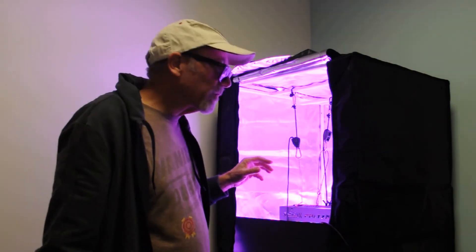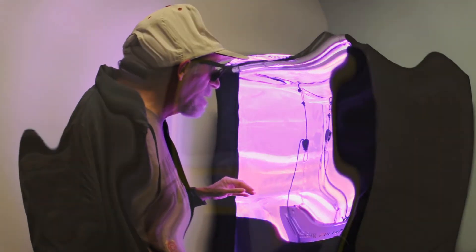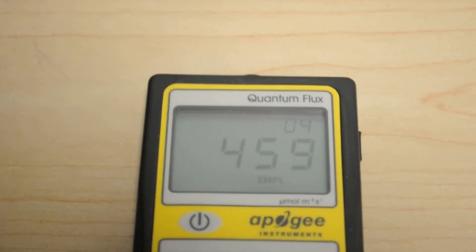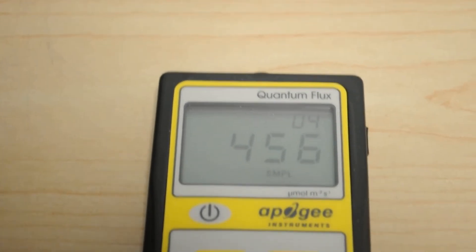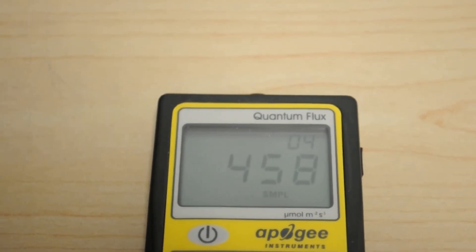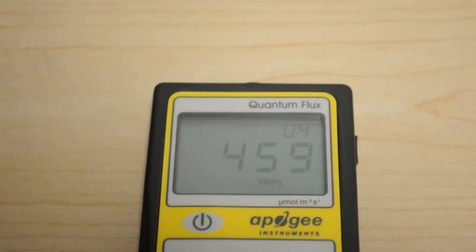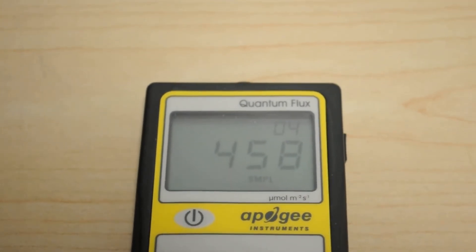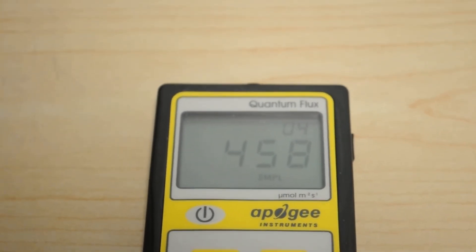And we're going to have that very important dead center reading here for you coming right up. Okay, so there's the number, that's the dead center number for the Flyzon 600: 459. And that's using both the veg and the bloom cycle there. That's full power and it's bouncing back and forth there a little bit, but 458, 459, kind of back and forth.